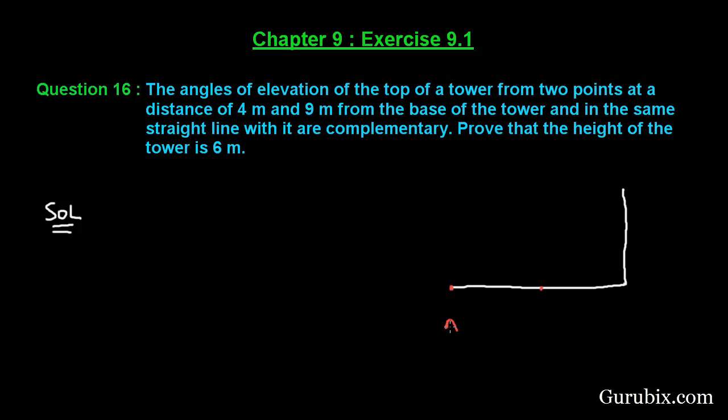Suppose this is point A which is 9 meters away from the foot of the tower, and here we have point B which is 4 meters away from the tower. And this is also given to us that the angles of elevation are complementary.